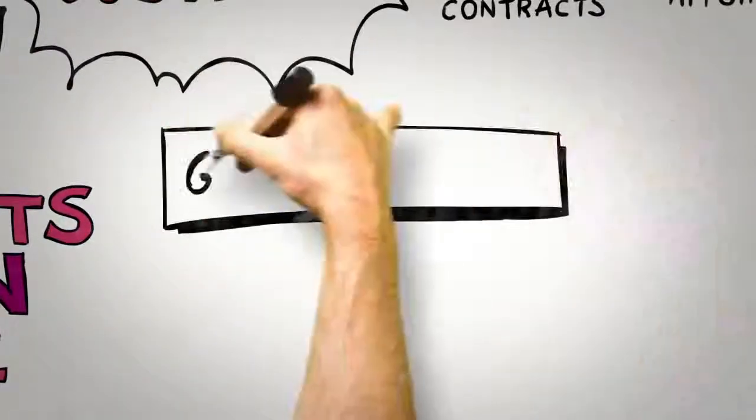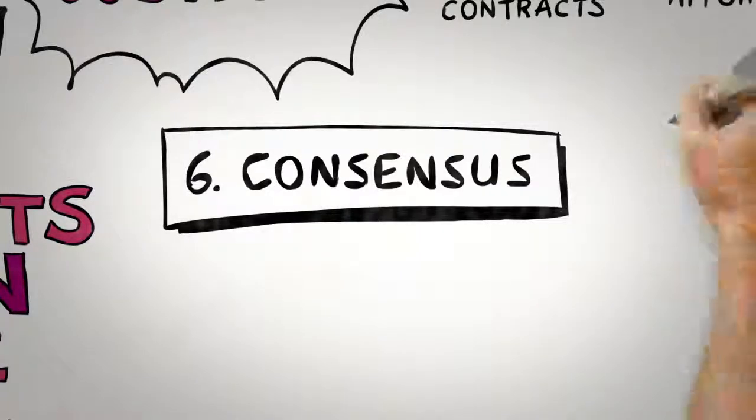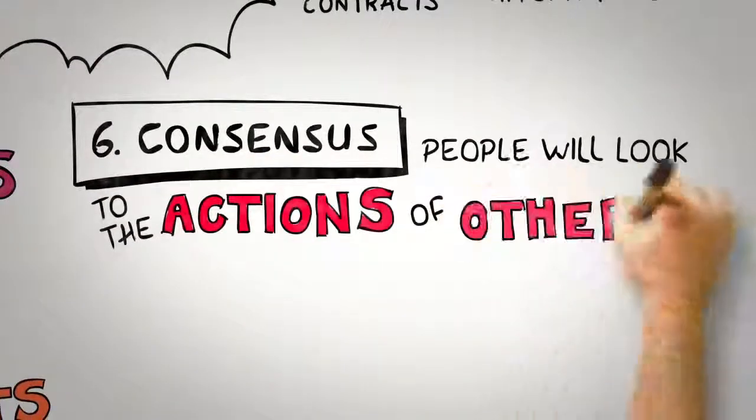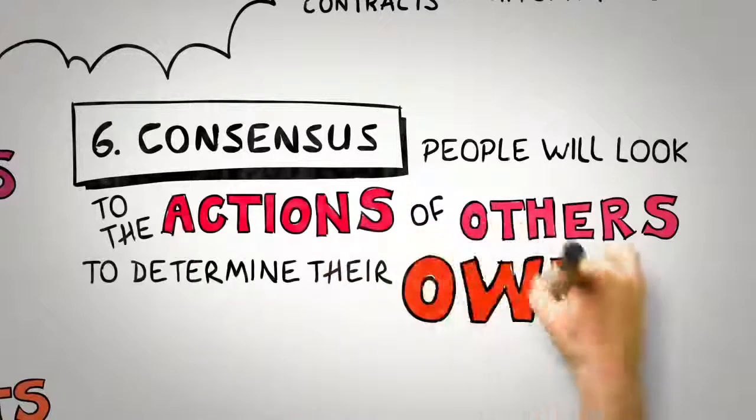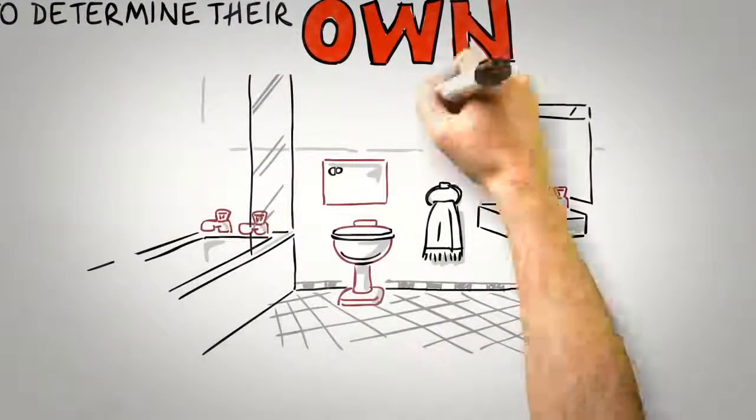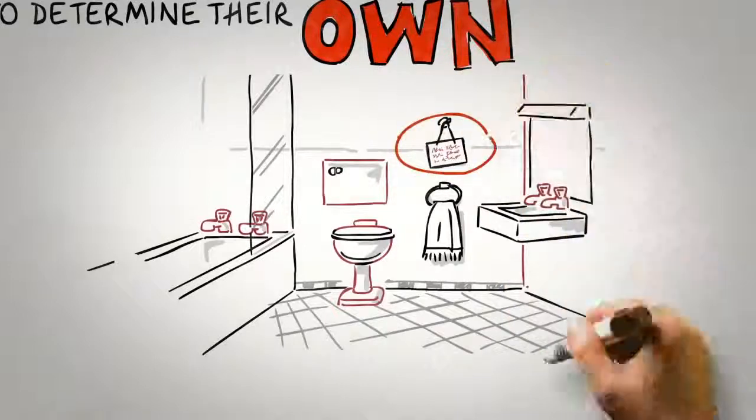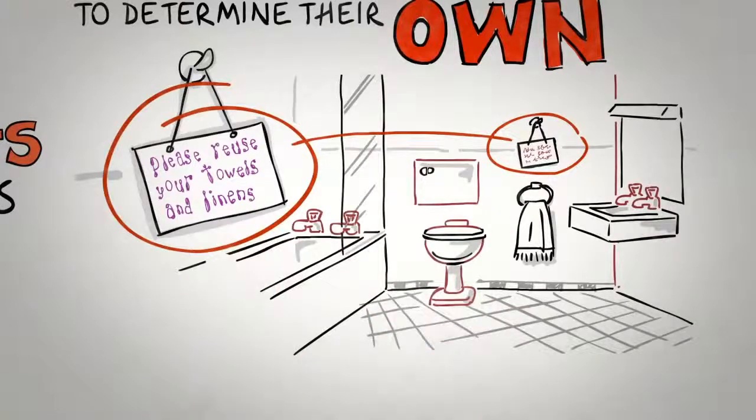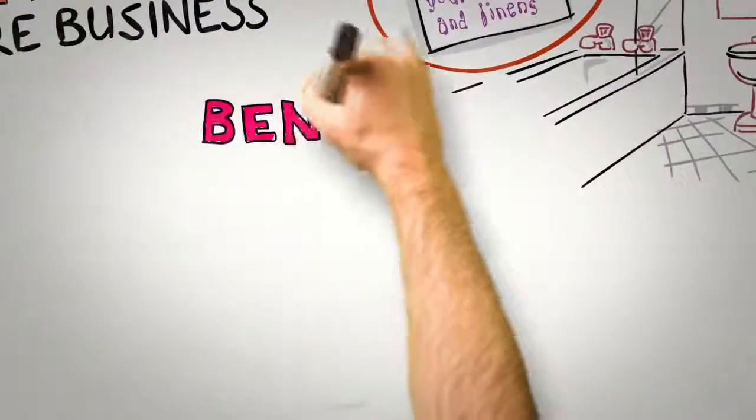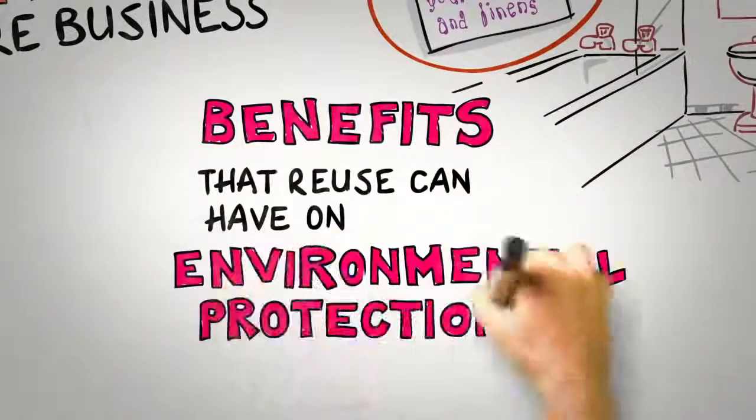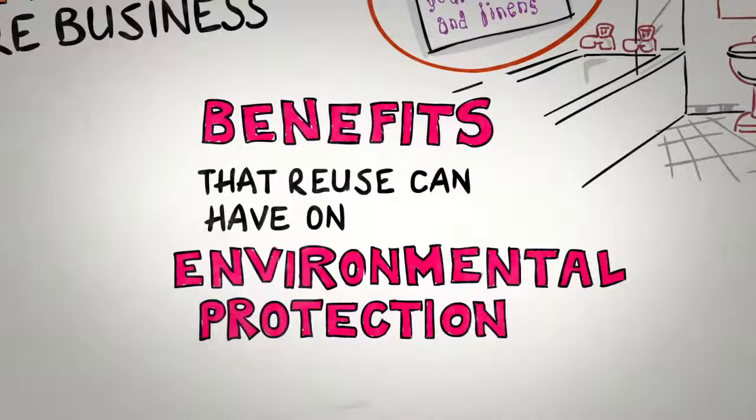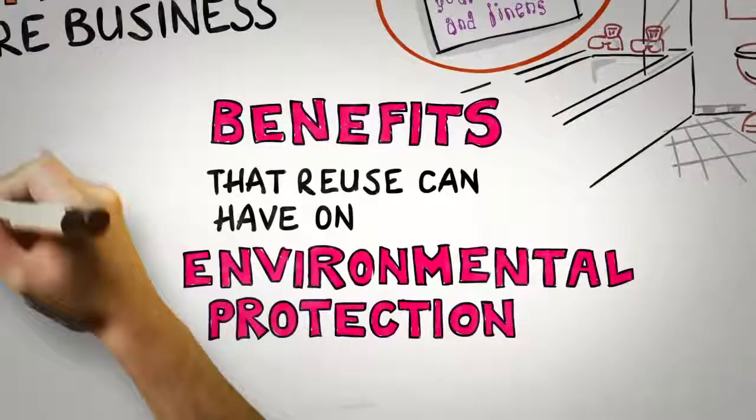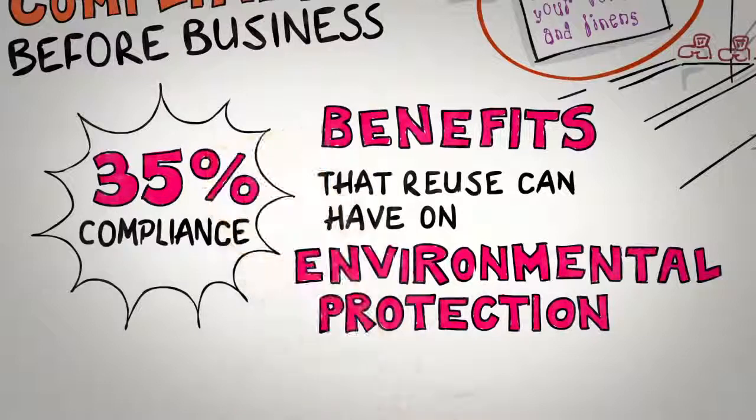The final principle is consensus. Especially when they are uncertain, people will look to the actions and behaviors of others to determine their own. You may have noticed that hotels often place a small card in bathrooms that attempt to persuade guests to reuse their towels and linen. Most do this by drawing a guest's attention to the benefits that reuse can have on environmental protection. It turns out that this is a pretty effective strategy, leading to around 35% compliance. But could there be an even more effective way?